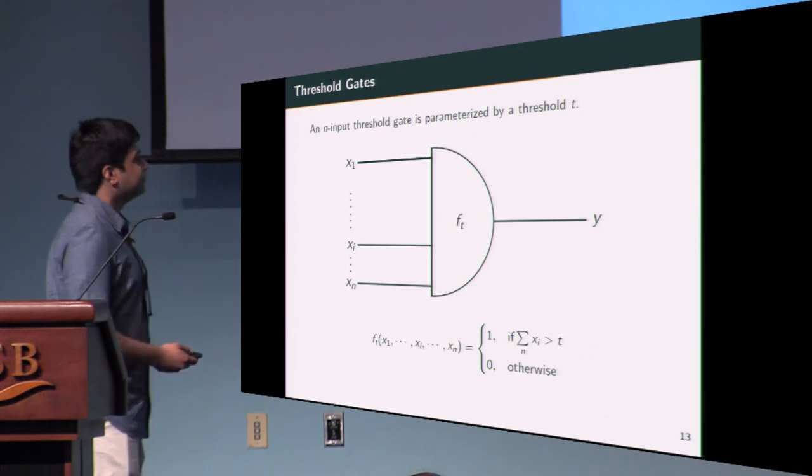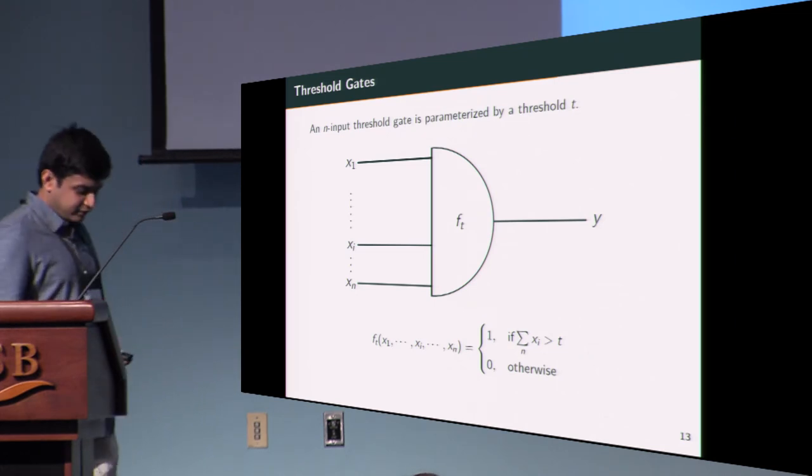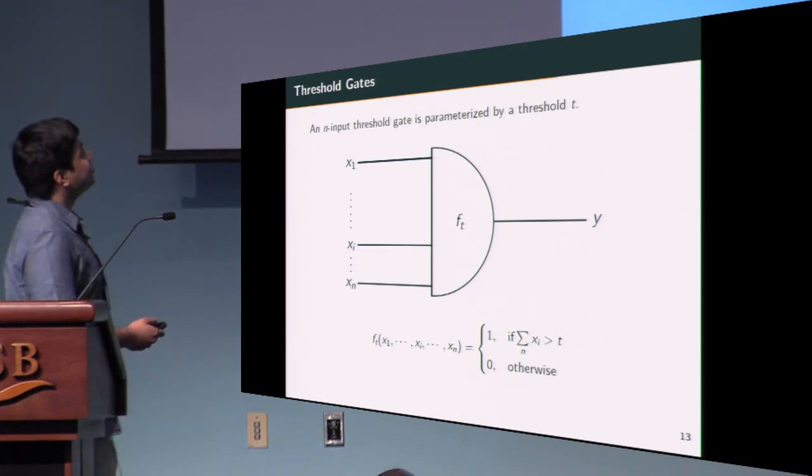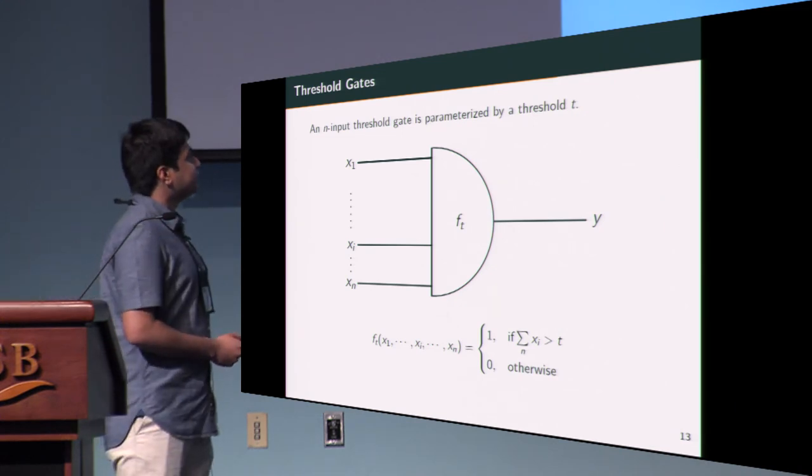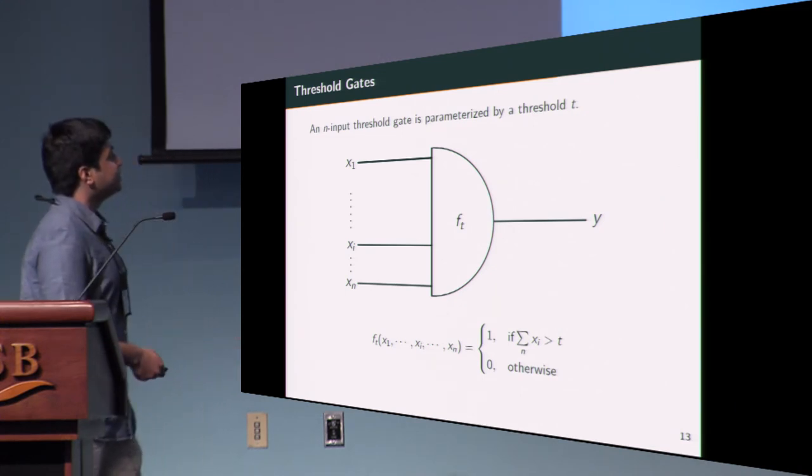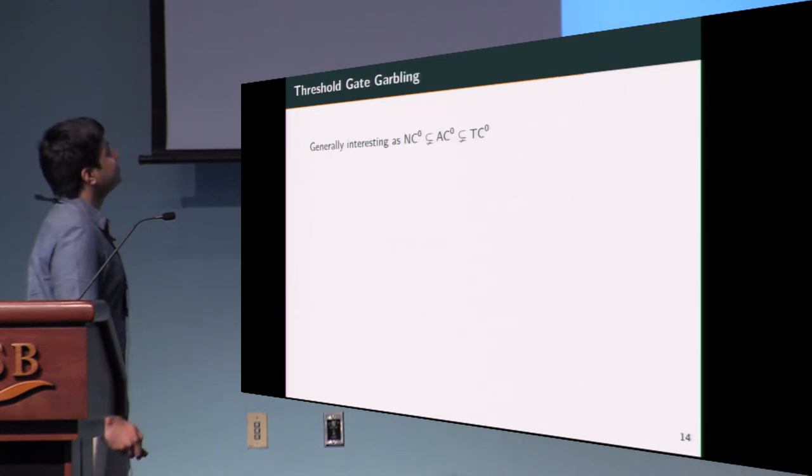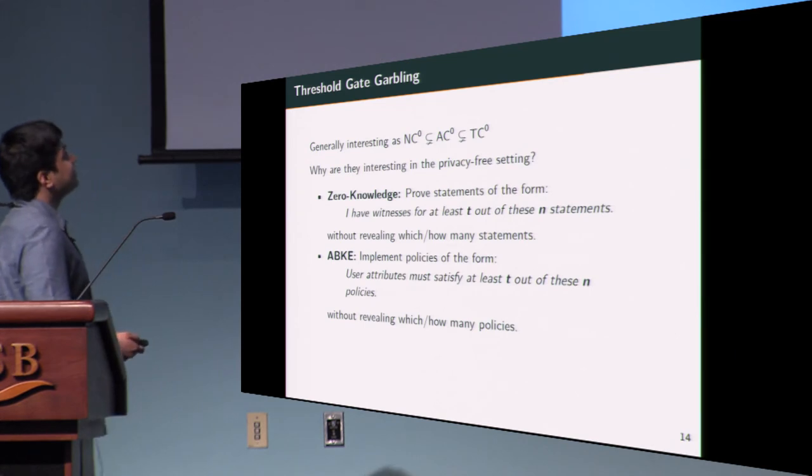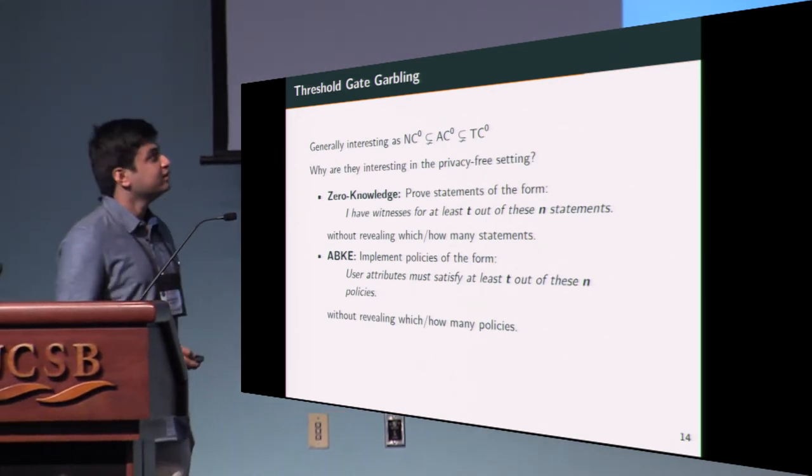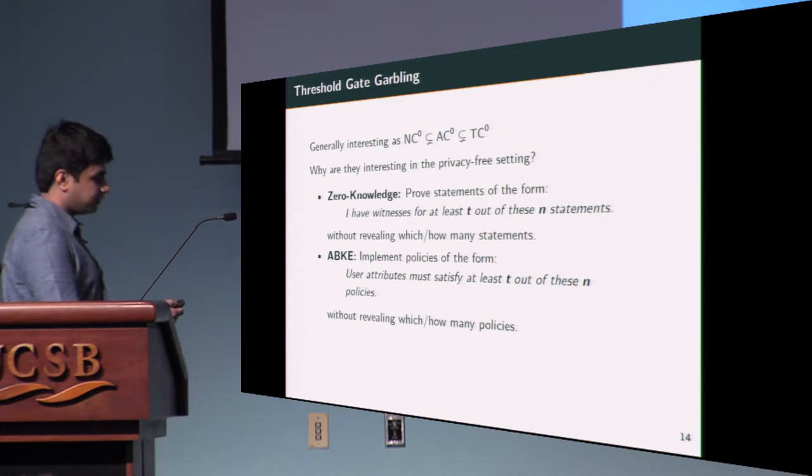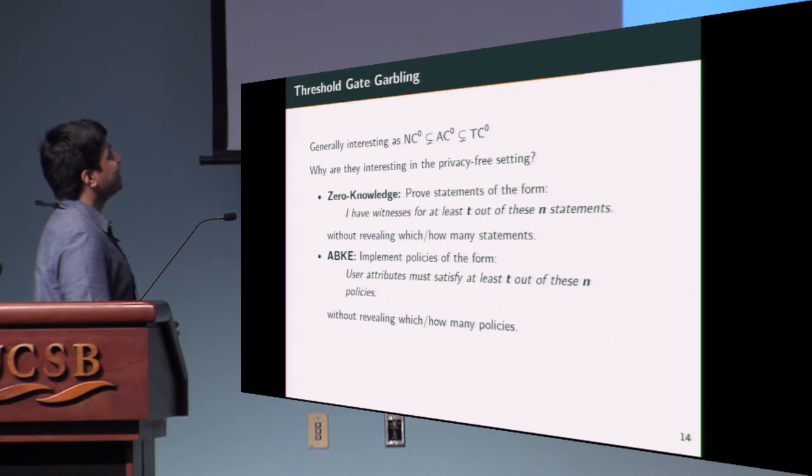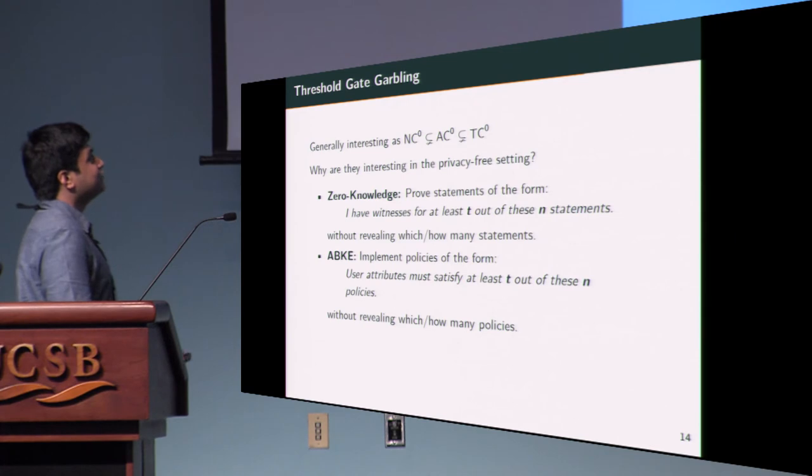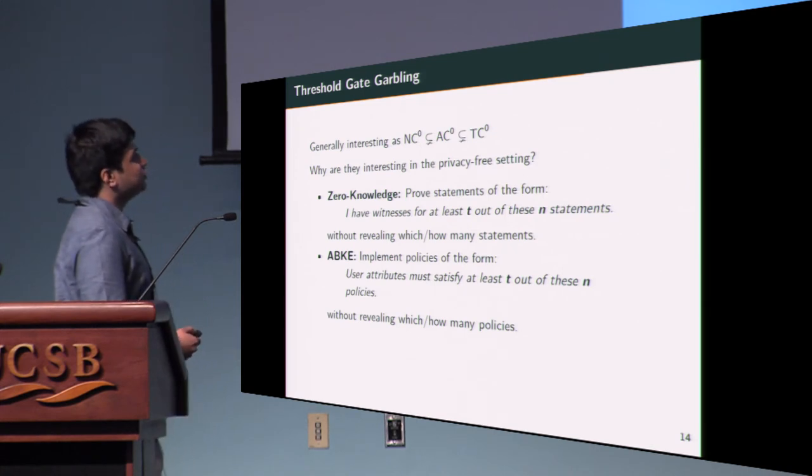Let's take a look at threshold gates, which are another class of gates that we consider. A threshold gate essentially has N inputs and threshold T. The threshold gate outputs 1 if more than T of the inputs are 1 and outputs 0 otherwise. It's generally interesting to consider garbling natively as TC0s in a separate complexity class, but why is it interesting in the privacy-free setting? As they allow us to express some statements more naturally in some of their applications. In zero knowledge, for instance, this means that we can prove statements of the form 'I have witnesses for at least T out of these N statements' without revealing exactly which statements or even how many statements. In the case of attribute-based key exchange, we can implement policies of the form 'user attributes must satisfy at least T out of these N policies' more naturally without revealing exactly which or how many policies.